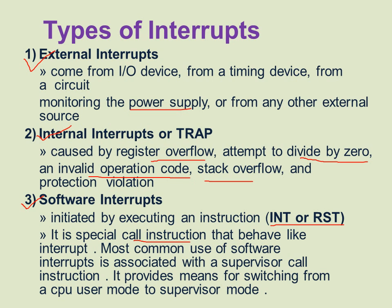Software interrupts are most commonly associated with the supervisor call instruction. This provides a means for switching from CPU user mode to supervisor mode. When a user mode program needs to request supervisor services, it uses the supervisor call instruction, which causes a software interrupt. At that time, the state of the CPU is stored, and the system starts running in supervisor mode. When the supervisor program finishes executing, control returns to user mode.